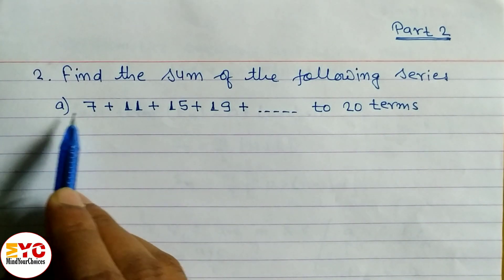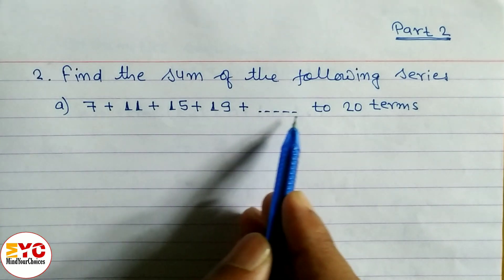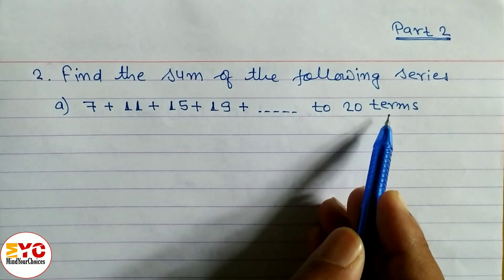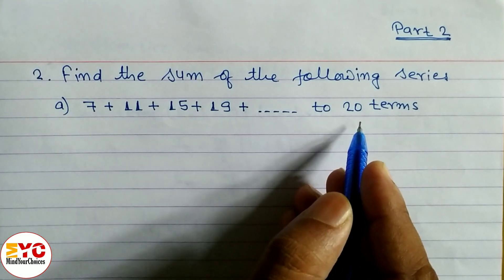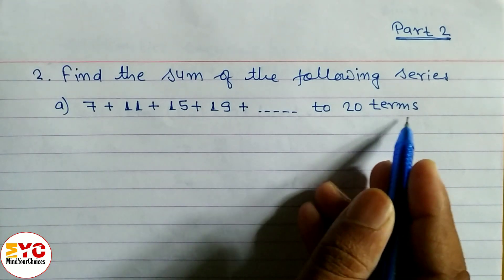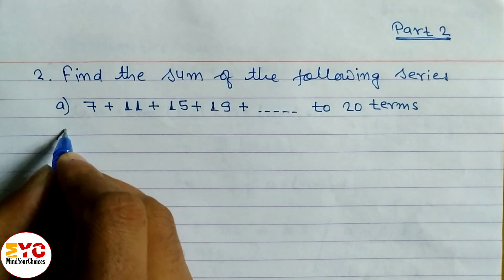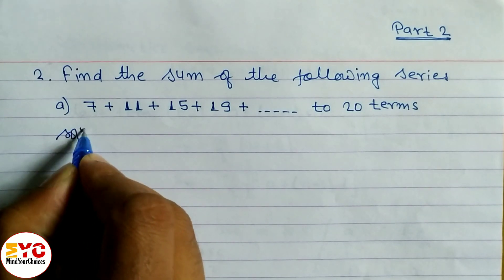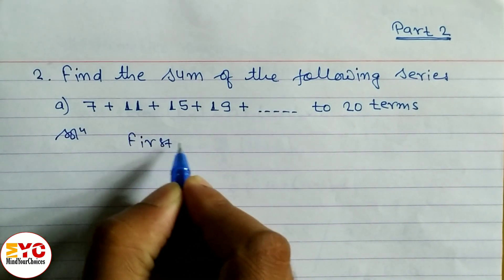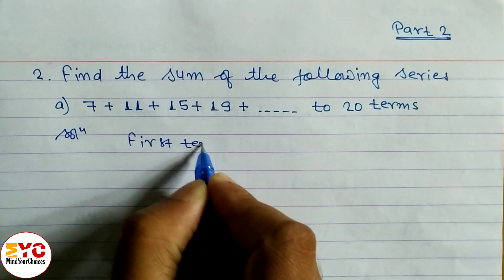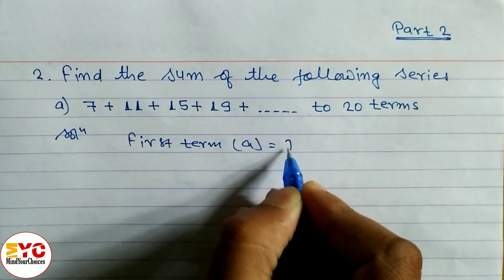Question number A: 7 plus 11 plus 15 plus 19, up to 20 terms. 20 terms means n is equal to 20. The first term a is equal to 7.